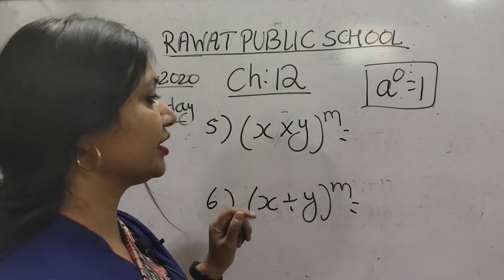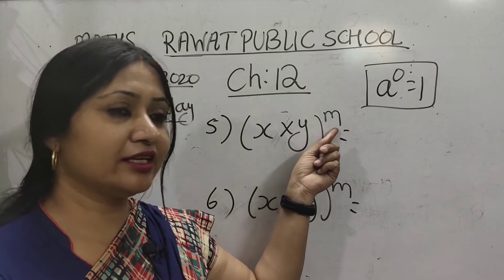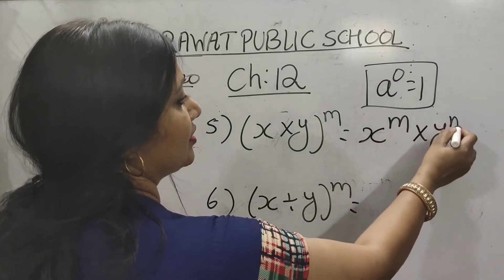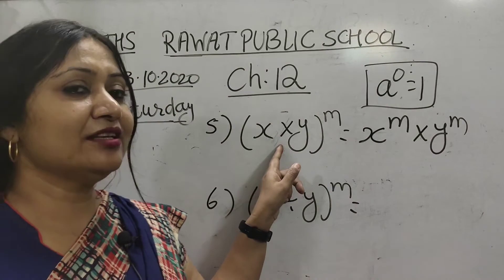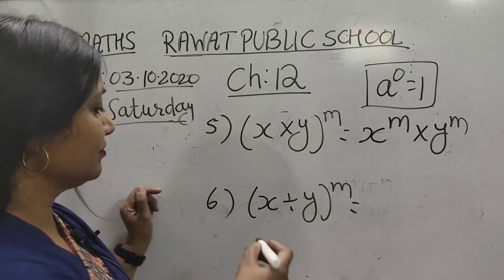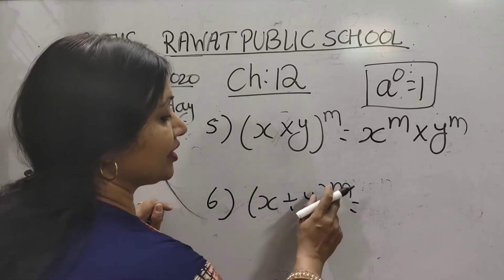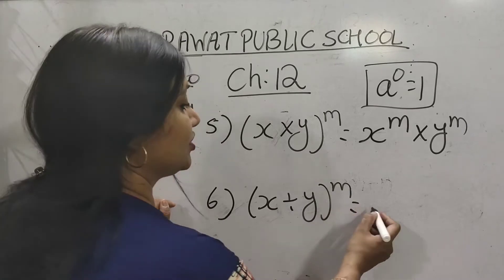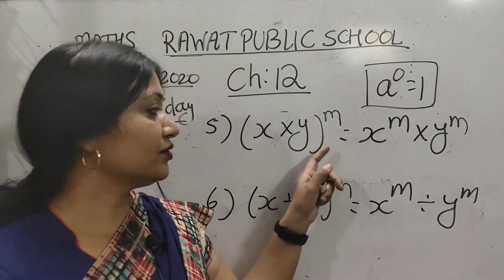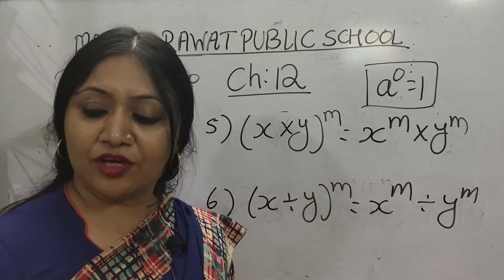Fifth law: x into y — when bases are different but power is single, then x^m × y^m = (xy)^m. Sixth law: x divided by y, raised to the power m, is equal to x^m divided by y^m. So there are six laws used in this chapter and in exercise 12.2.